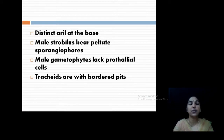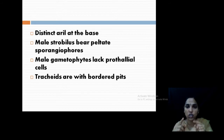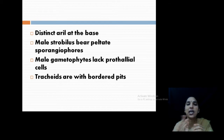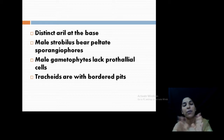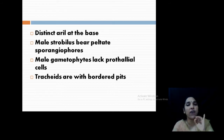A very important and special character is the presence of an aril. An aril is a part of the fruit — a special cover or structure known as an aril present in the fruit. The male strobilus has peltate sporangiophores, similar to the peltate structure seen in Equisetum. During development, a special structure called the prothalial cell is seen in the development of the male gametophyte in the usual case, but that is also absent in Taxus. Tracheids are bordered with the typical character of Coniferales. So the presence of an aril and peltate sporangiophores are typical features.